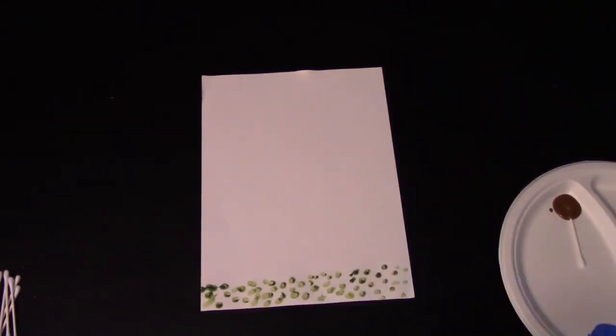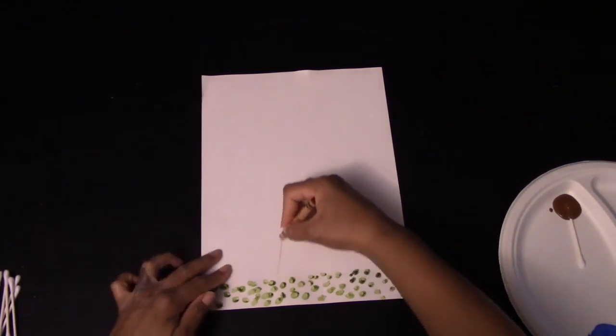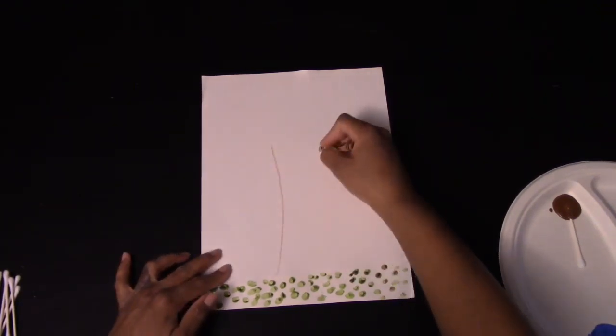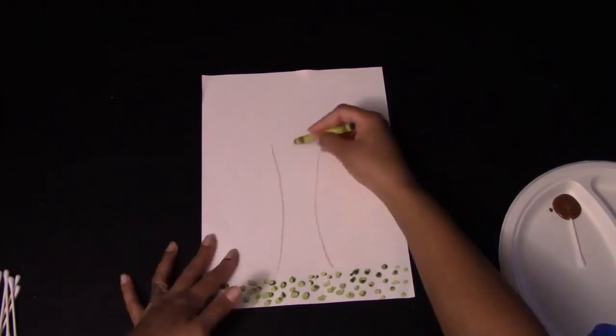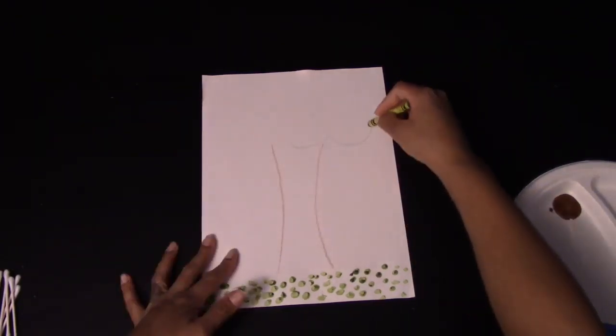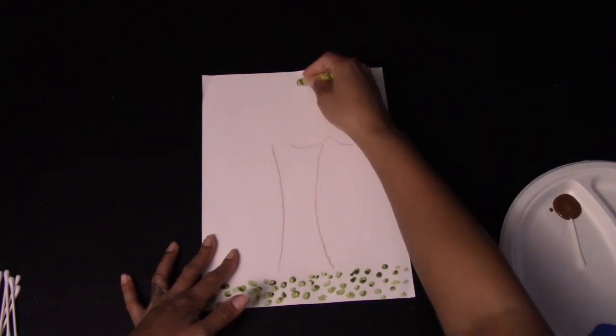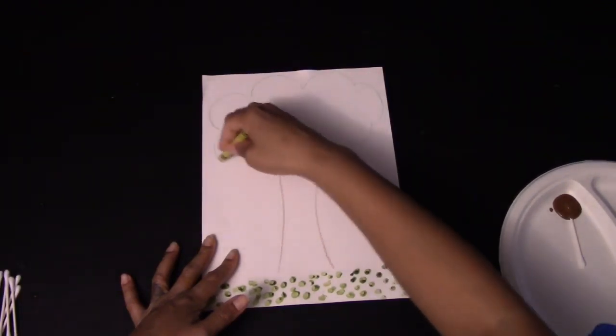We're going to work on another technique that might be helpful. Take a brown crayon and lightly draw the outline of the bark of your tree, just like so. Next, take a green crayon and do the same thing for the top of your tree, very lightly.